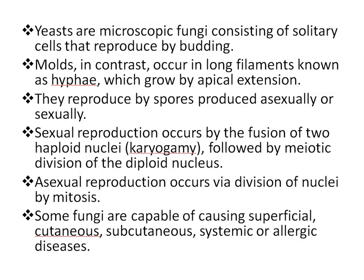Fungi reproduce by spores, produced asexually or sexually. Sexual reproduction occurs by the fusion of two haploid nuclei — this process is called karyogamy — followed by meiotic division of the diploid nucleus. Asexual reproduction occurs by division of nuclei by mitosis. Some fungi are also capable of causing superficial, cutaneous, subcutaneous, systemic, or allergic diseases.